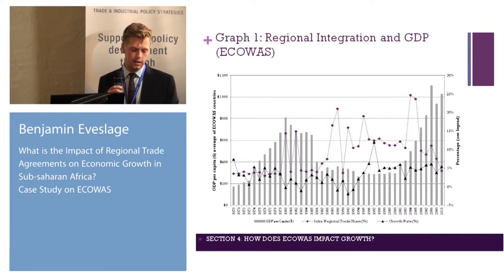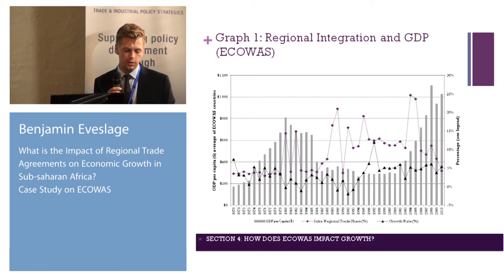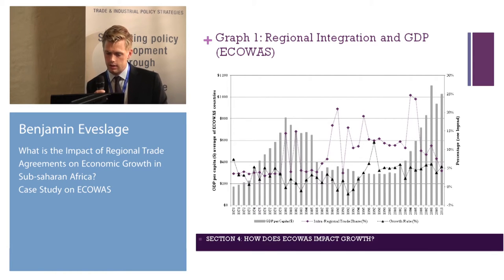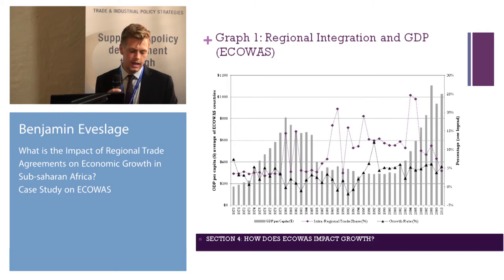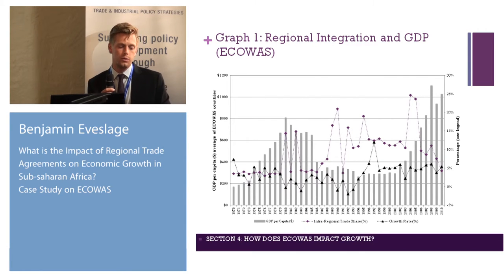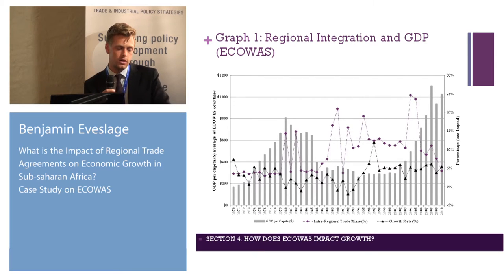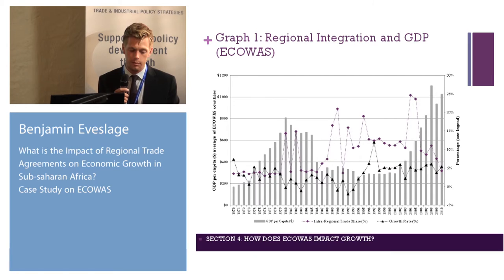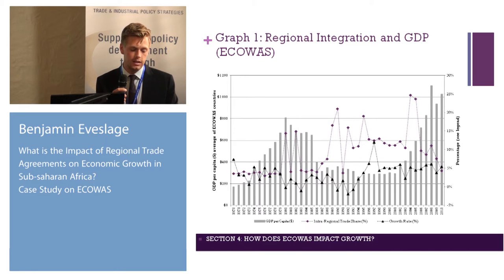Graph one demonstrates the share of trade between ECOWAS members, shown by the inter-regional trade share in the purple dashed line, going from 1970 to 2010. It has fluctuated considerably but behaved inversely with the regional GDP per capita, meaning that the share of inter-regional trade increased during the 1980 to 2000 growth slump, but decreased after 2004 when GDP growth increased. This is likely an indication of the region's dependence on commodity export prices, which dominate its international trade and were driven by the commodity super cycle.